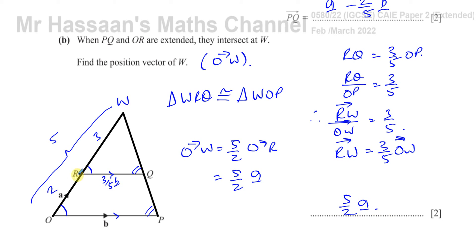We can verify: RW is three-halves a, and two-halves plus three-halves is five-halves, which checks out. The whole thing is five parts, OR is two parts, and RW is three parts. So from O to R is a, and from R to W must be a plus another half a — two and a half a — because that's three parts. Using similarity with these two triangles makes this question straightforward.